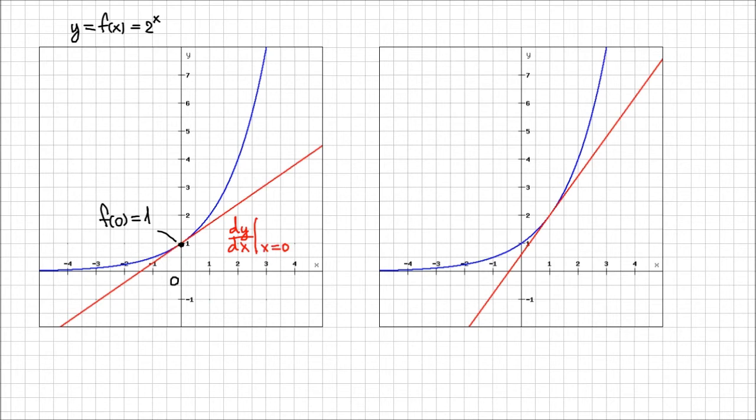That's how we write the derivative of a function at a particular point. It's obviously less than 1. So I can note it's less than 1. So the function value is 1, and the derivative is less than 1.